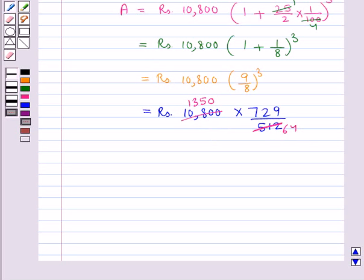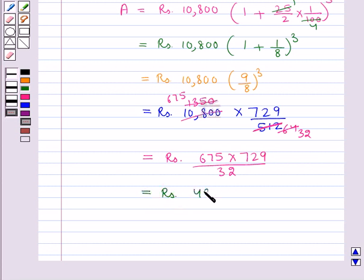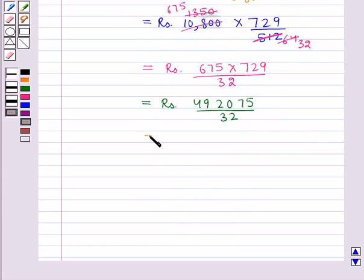Further 32, 2 times is 64 and 675, 2 times is 1350. And so this is further equal to Rs. 10,800 multiplied by 729 upon 32. And now this is further equal to Rs. 492075 upon 32 which is further equal to Rs. 15377.34.